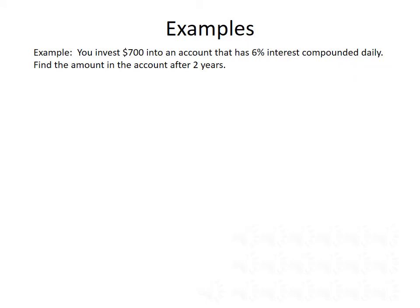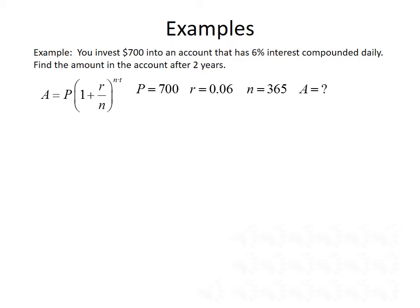Next, you invest $700 into an account that has 6% interest compounded daily. Find the amount in the account after two years. Reading through the problem: P is 700, R is 0.06, compounded daily means N equals 365, A is what we're looking for, and after two years means T equals 2. Plugging into the formula, A equals 700 times 1 plus 0.06 divided by 365, all raised to the 365 times 2, which gives us approximately $789.24.